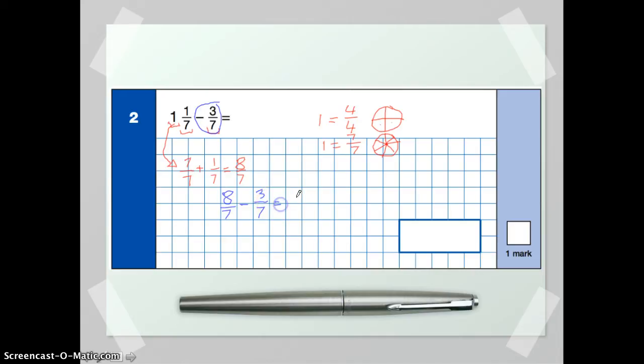So eight subtract three is going to be five, over... Now, because we're subtracting from the same kind of fraction, over seven, our answer is also going to be over seven.